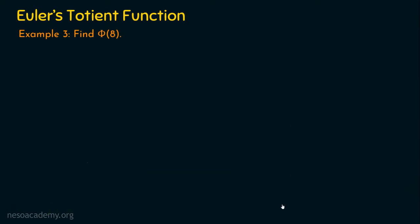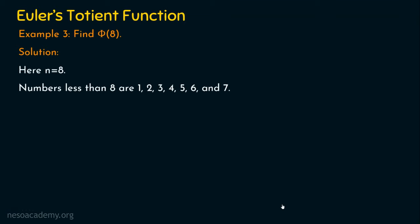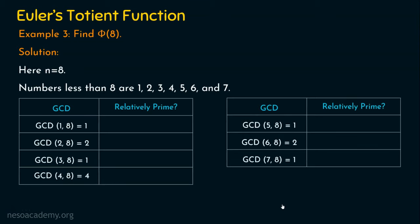Now let's see the last example: find phi of 8. Here n is equal to 8, so we list numbers from 1 to 7 and compute their GCD with 8. GCD of 1 and 8 is 1; GCD of 2 and 8 is 2; GCD of 3 and 8 is 1; GCD of 4 and 8 is 4; GCD of 5 and 8 is 1; GCD of 6 and 8 is 2; GCD of 7 and 8 is 1.